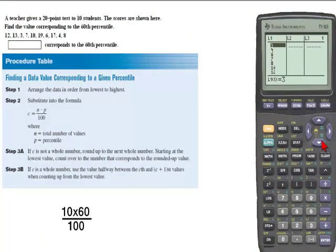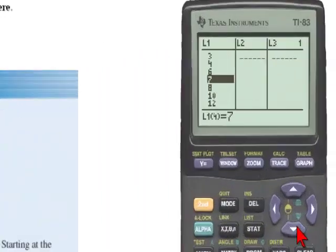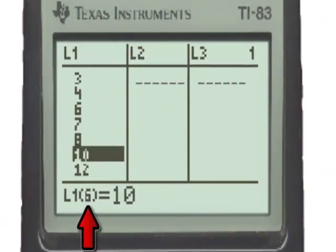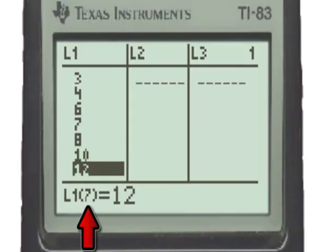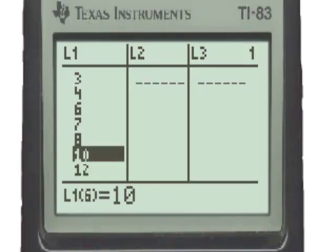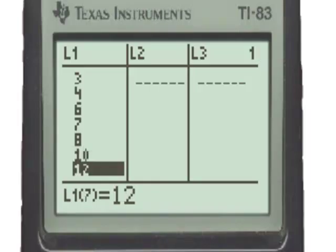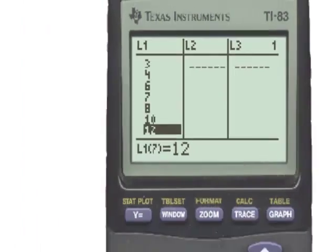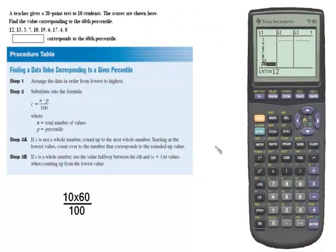Therefore, we'll go up to the 6th value. Here we are at the 6th value. The 7th value is 12, so we will look at the number that is the average of 10 and 12, which is 11. Therefore, for the data set that we see here, the 60th percentile is the number 11.